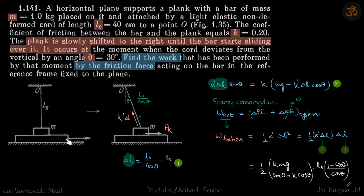We have a plank that is slowly moved towards the right, so there is friction present between these two surfaces. This mass m will also come along with the plank. Now it's given that at a given angle theta, the mass m just starts to slide, and we need to find the work done by the friction from here to here.